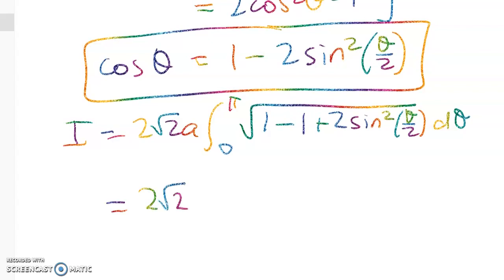Right, 1 - 1 + 2sin²(θ/2) dθ. So in some ways I think this question is really no harder than a level 3 integration question. Right, because now we've got √2 sin(θ/2) dθ.